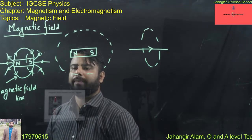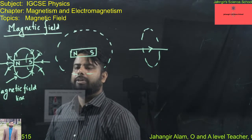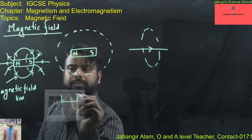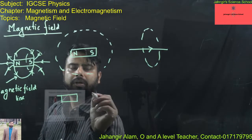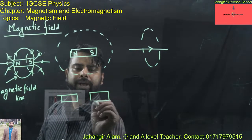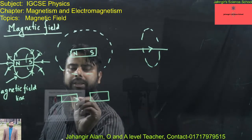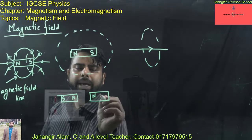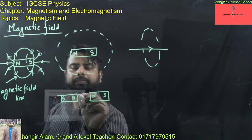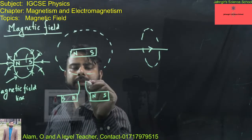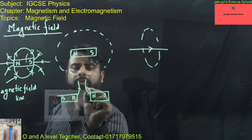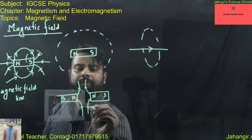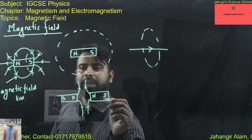The magnetic field between two bar magnets can be identified by placing them face to face. If both are North Poles facing each other, the magnetic field lines will repel and they never intersect each other.